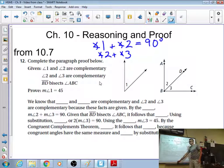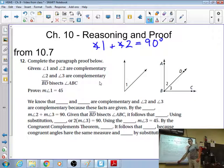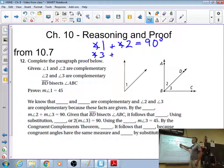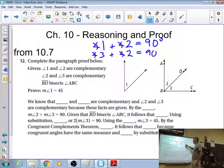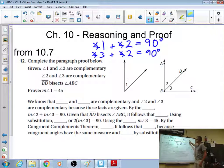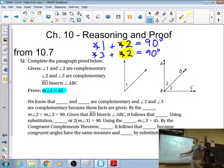And angle 2 plus angle 3. Now, I'm actually going to do myself a favor here. I'm going to flip that around, because addition is commutative. So, I can actually turn my addition around and say angle 3 plus angle 2 is equal to 90. Now, I notice something here. At least, I hope I notice something here.